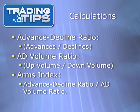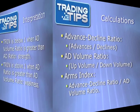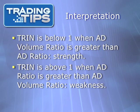Next, we have the AD volume ratio, which takes the number of stocks up in volume and divides them by the number of stocks down in volume. Finally, the Arms Index takes the advance/decline ratio and divides it by the advance/decline volume ratio.